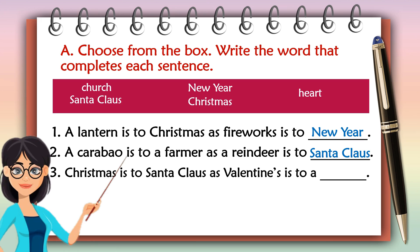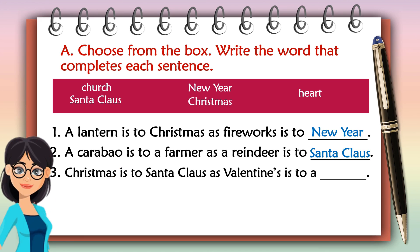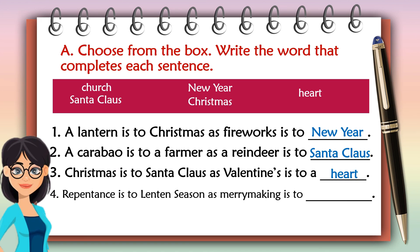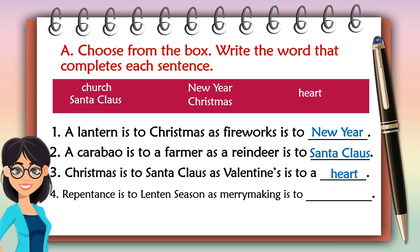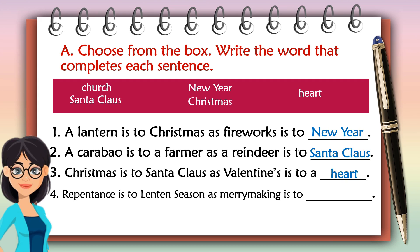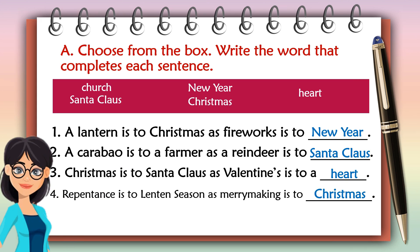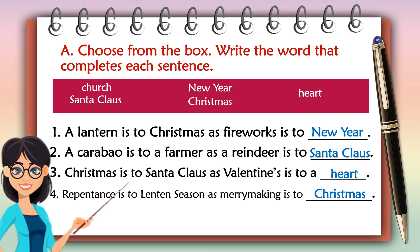Number two: New Year as Valentine's. And a clause is to... Yes — heart. Number four: Repentance is to Lenten season as merrymaking is to... Yes — Christmas.